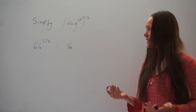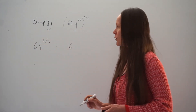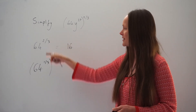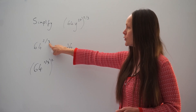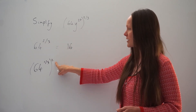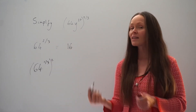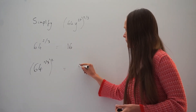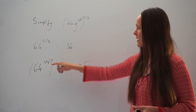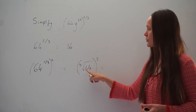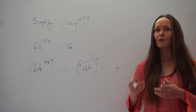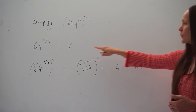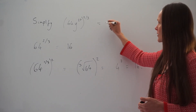If you want to do this without a calculator, you can rewrite 64 to the power of 2 thirds as 64 raised to the power of 1 third, then all squared. The denominator part of the fraction goes inside the brackets and the numerator outside. Anything raised to the power of 1 third is the same as cube rooting. So we find the cube root of 64, which is 4, because 4 cubed is 64. Then we square that result: 4 squared is 4 times 4, which is 16 — the same answer as using a calculator.